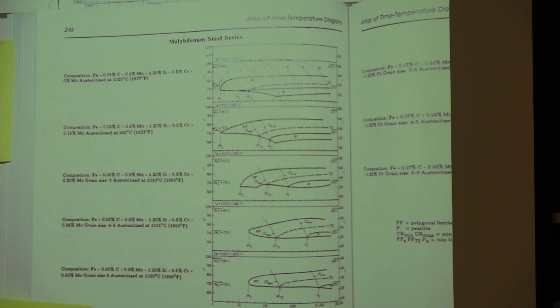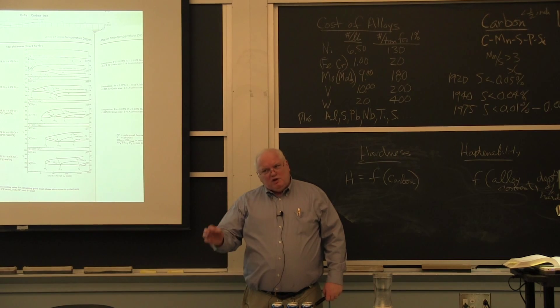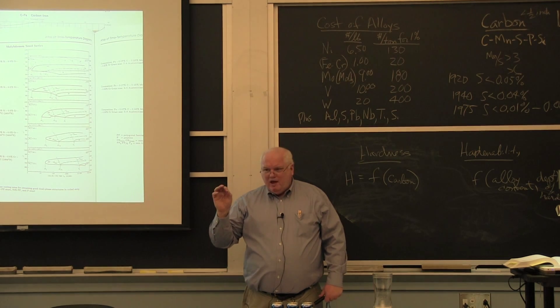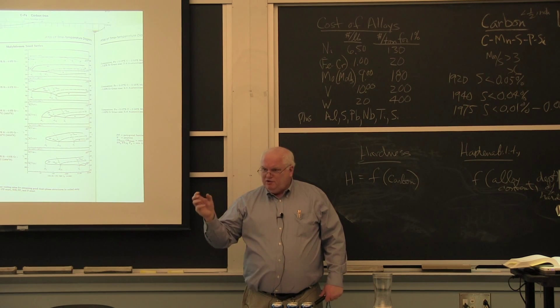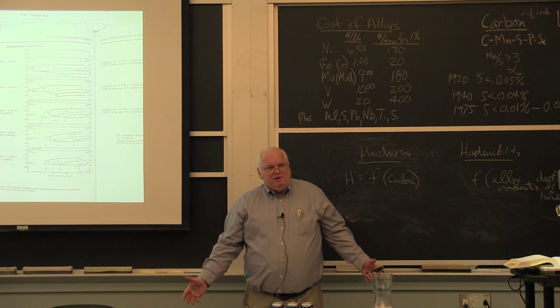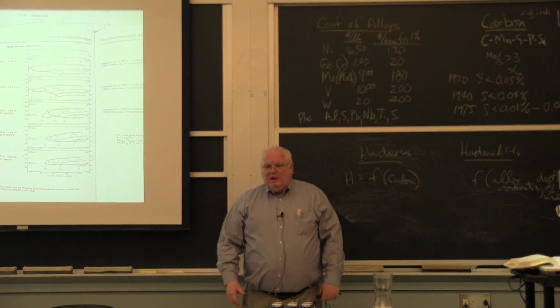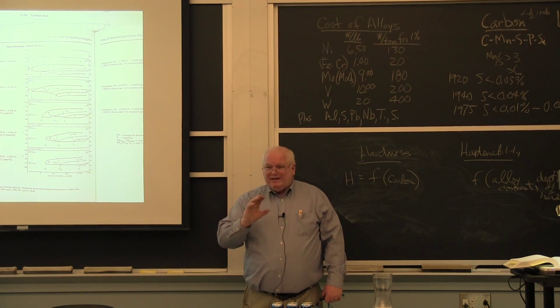A half percent molybdenum is going to cost me $100 a ton. My $400 a ton steel is now $500 a ton steel. So the question was, why are there so many steels? Well, if you're buying 100,000 tons, you want just the right amount of alloy. You don't want to pay for a half percent moly if you can get by with 0.4 moly for the thickness that you're interested in. So that's why there are so many steels. It's used one and a half billion tons a year in the world. And at that quantity and at these alloy prices, it's cost effective.